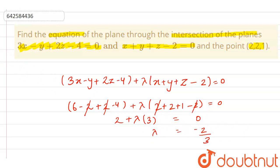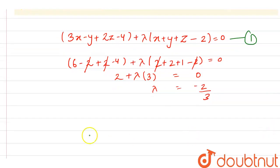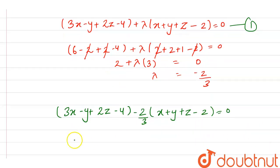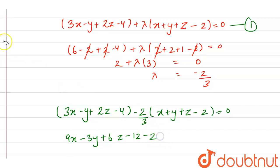Now putting the value of lambda, which is minus 2 by 3, into equation 1, we get: 3x minus y plus 2z minus 4, plus minus 2 by 3 times x plus y plus z minus 2, equals 0. Multiplying through by 3: 9x minus 3y plus 6z minus 12, minus 2x minus 2y minus 2z plus 4, equals 0.